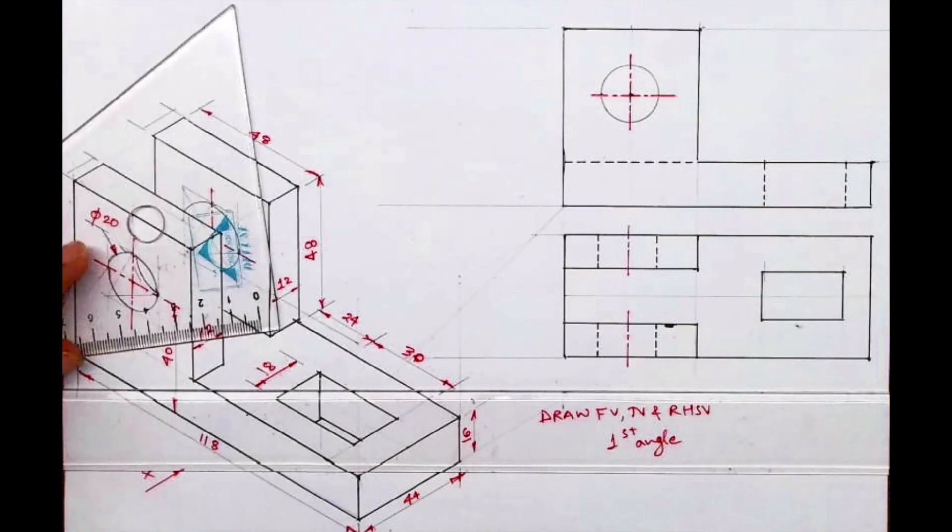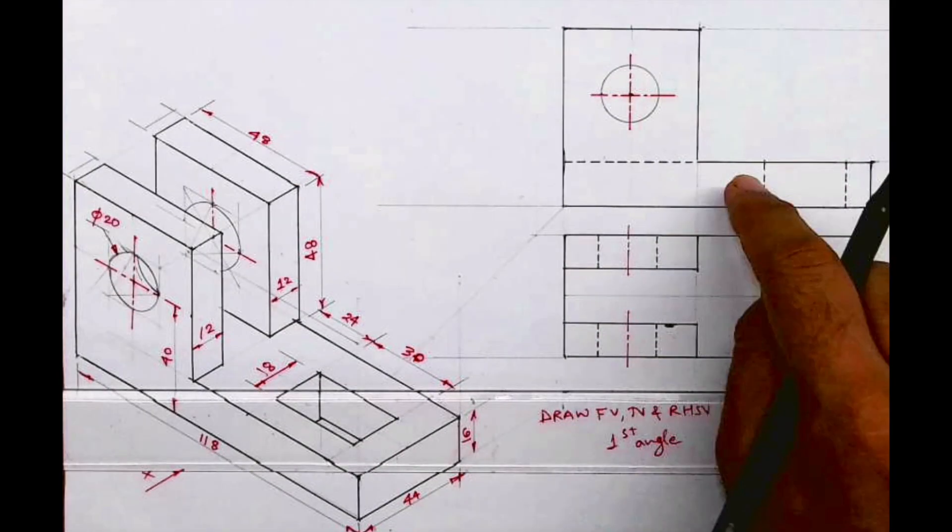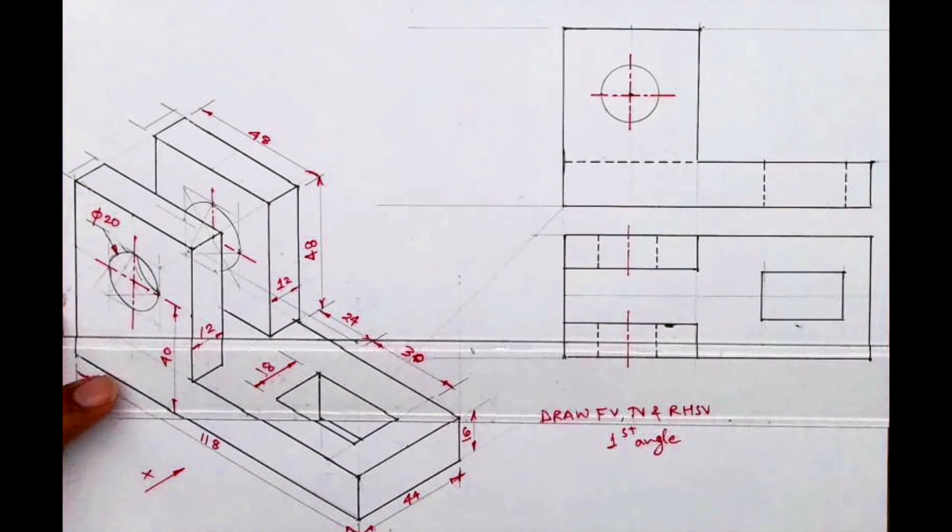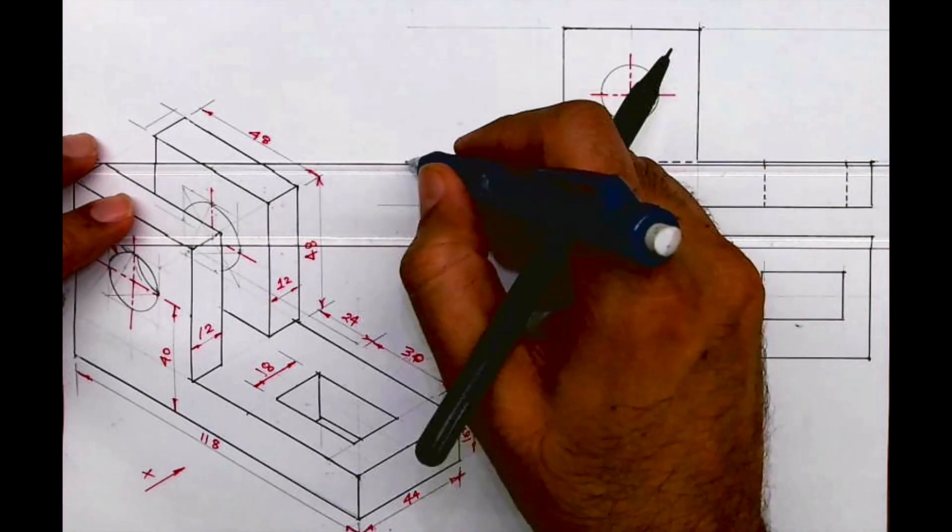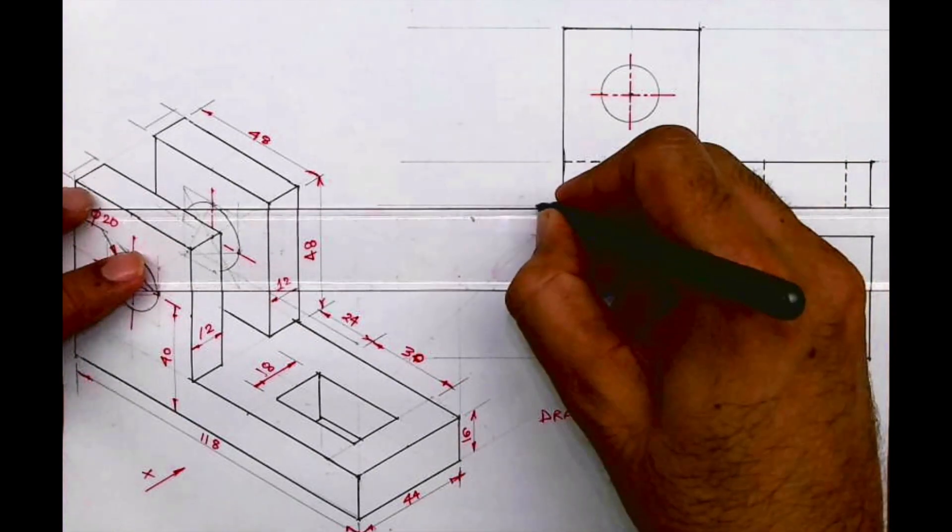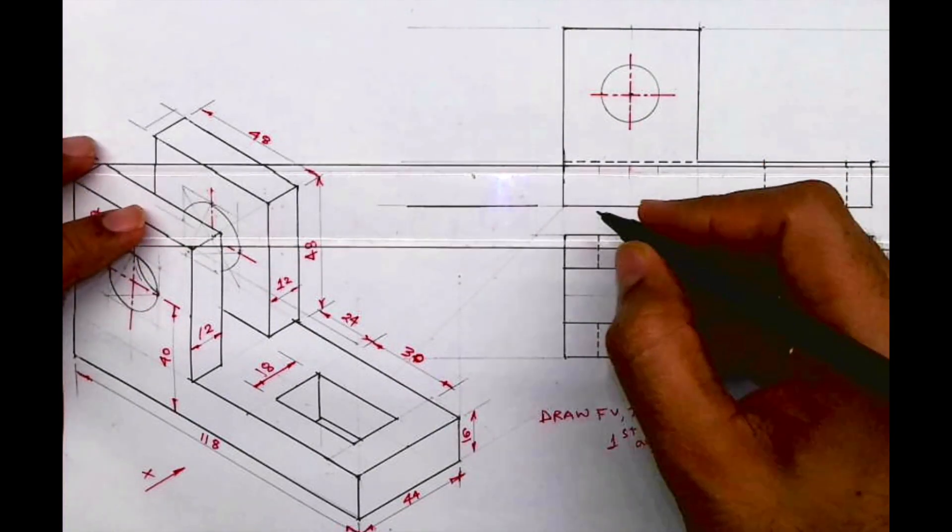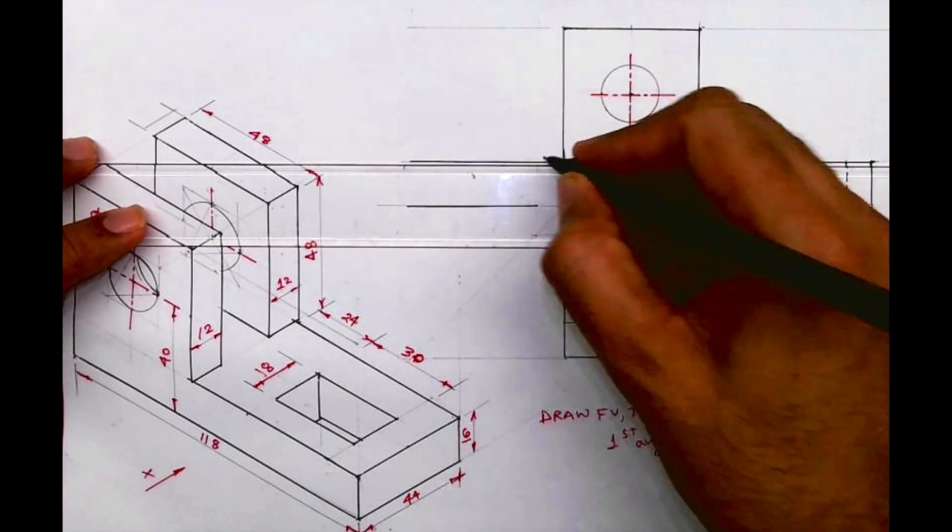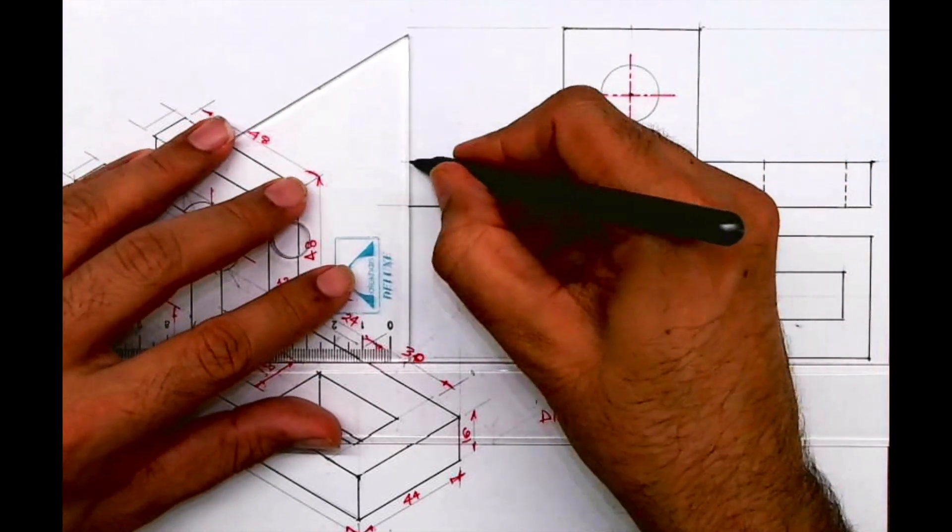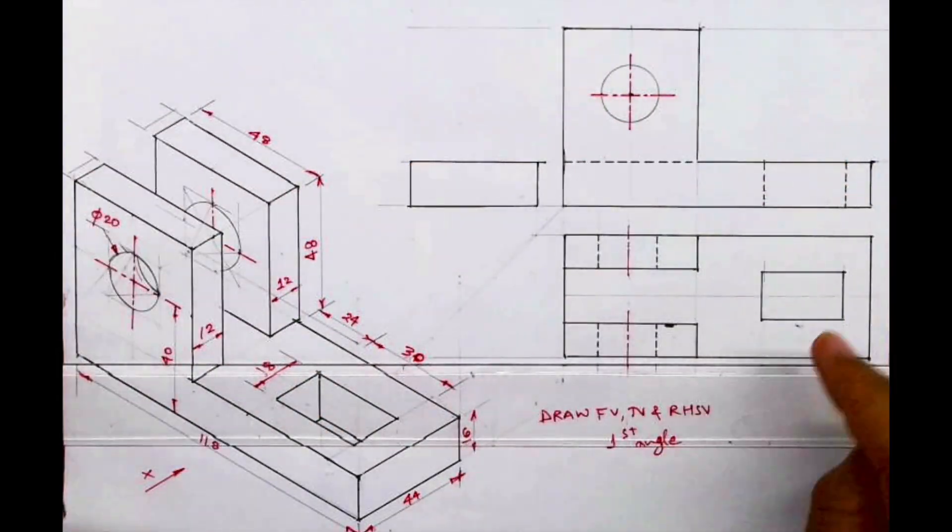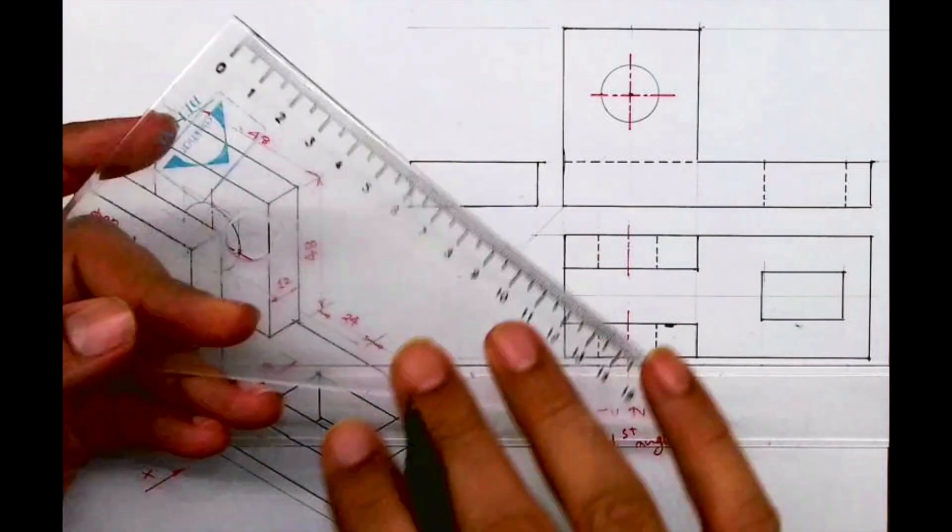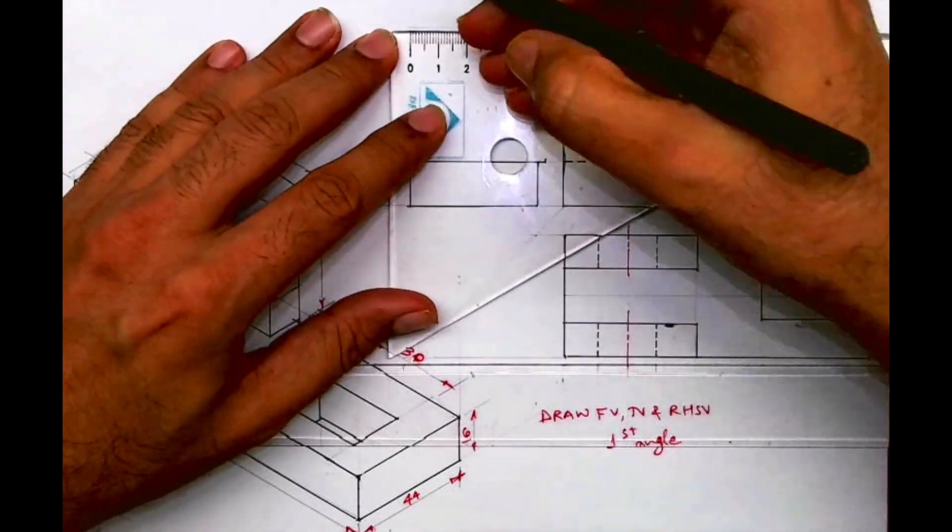We are done with the top view. Now we need to draw the side view. For the side view, we'll see these three rectangles. One is 44 by 16 - that we can project directly from here. Then you have these two rectangles 48 by 12. You can project from the top view or mark directly - 12 from here.